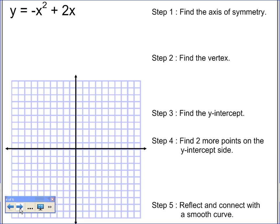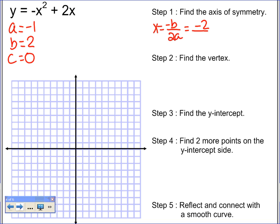Let's try one more. I'm going to find my axis of symmetry, so I need to know what a, b, and c are. a is negative 1, b is 2, c is 0. My axis of symmetry is x equals negative b over 2a: negative 2 over 2 times negative 1, which is negative 2 over negative 2, so x equals 1. My axis of symmetry is x equals 1.